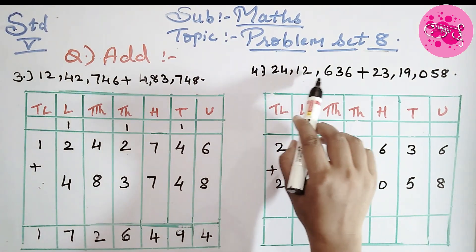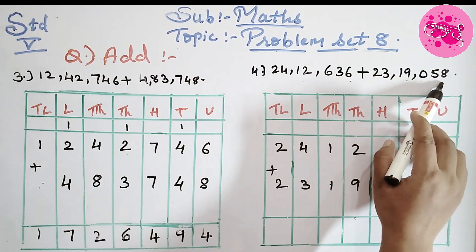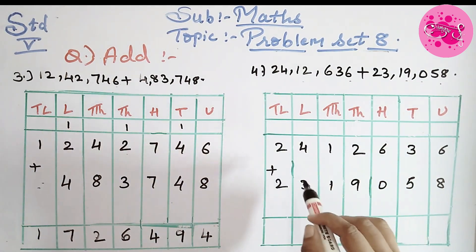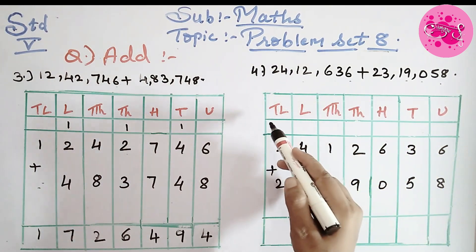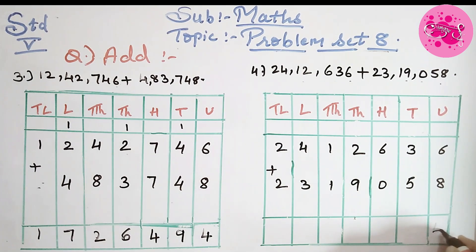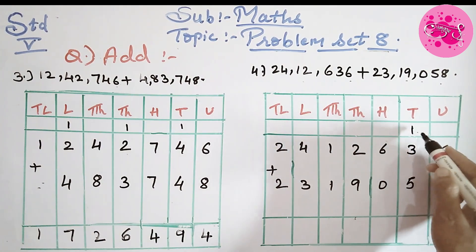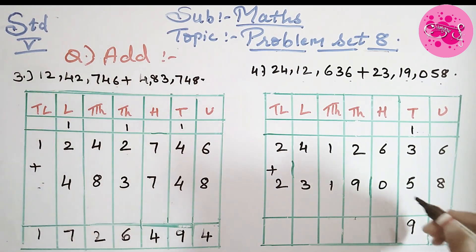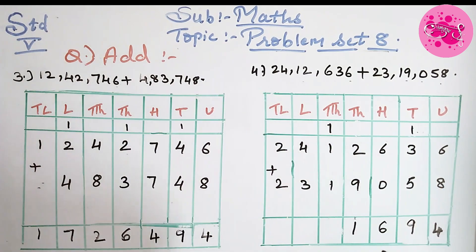Question number 4: 24,12,636 plus 23,19,058. To add, draw the box and write in the columns — unit, 10s, 100s, 1000s, 10,000s, lakhs. Now 8 plus 6 is 14, so write 4 down and carry 1. 5 plus 3 is 8, plus 1 is 9, so write 9 down. 0 plus 6, we get 6. 9 plus 2 is 11, so write 1 down and carry 1.